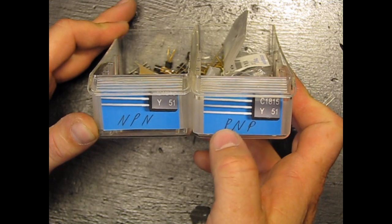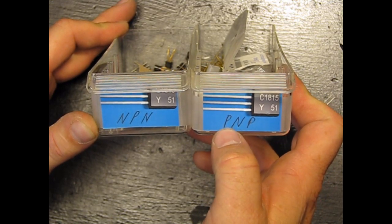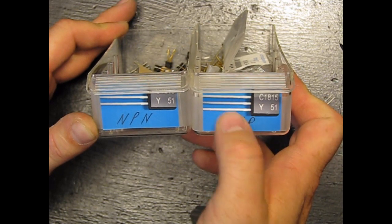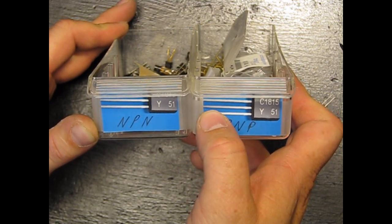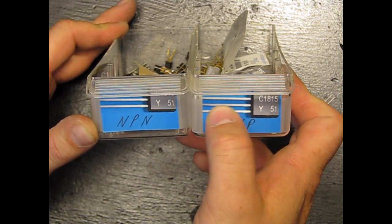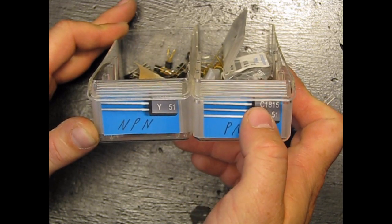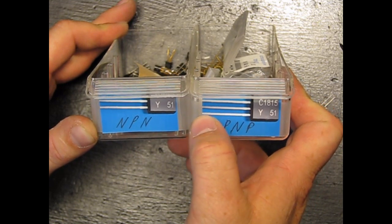And all it means is, so PNP, you would put positive voltage on one pin. You would put a negative signal, a tiny negative signal in here, and it would allow that positive to flow out of the other pin.